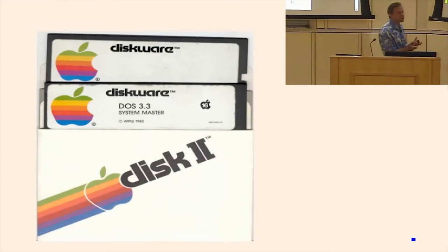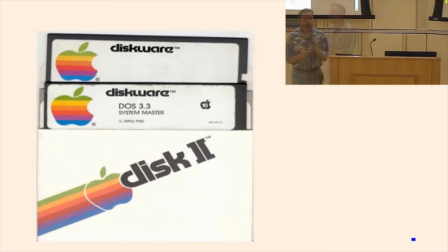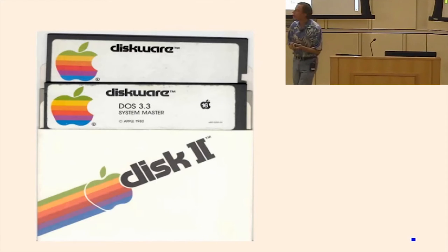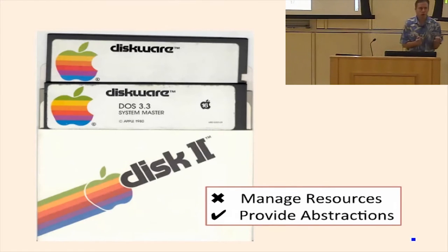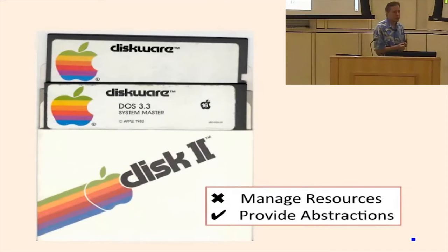Did it provide the management piece? How many programs can you run at once on this machine? Just one, right? So it was really designed for one user running one program. By our definition, it's not an operating system. It does one of the things an operating system needs to do — it provides abstractions — but it doesn't do anything to really manage resources. Every program that runs owns the whole machine and can do whatever it wants. So there's no management of resources.